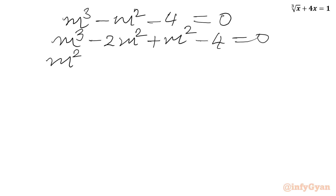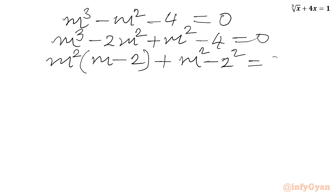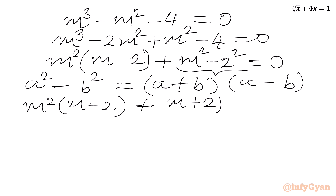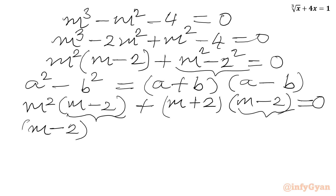From the first two terms m squared is common, so in the bracket we get (m minus 2). Then m squared minus 2 squared equal to 0. Using the identity a squared minus b squared equals (a plus b)(a minus b), we get m squared times (m minus 2) plus (m plus 2)(m minus 2) equal to 0. So (m minus 2)(m squared plus m plus 2) equal to 0.